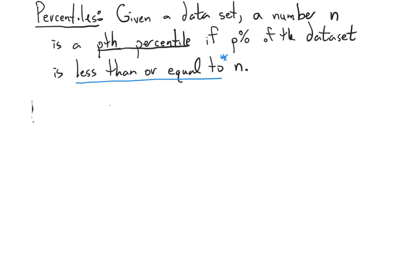In order to talk about the interquartile range, I need to explain what percentiles are. We're just going to have a bird's eye view of percentiles, because we're only going to care about three different percentiles — one of them we've already talked about. The idea of a pth percentile is a number where, if you have a data set, p percent of the data is less than or equal to that number.